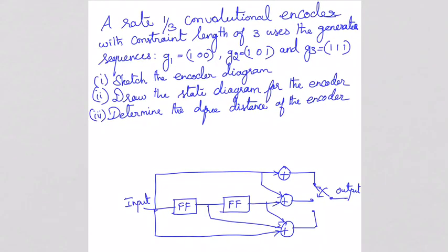One more problem: a convolutional encoder with rate 1/3 and constraint length 3, with generator sequences G1 = 100, G2 = 101, and G3 = 111. For this encoder, constraint length 3 means 2 flip-flops, and rate 1/3 means 1 input and 3 outputs. We draw a switch for getting the three outputs.